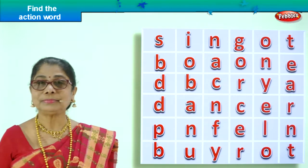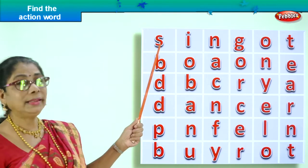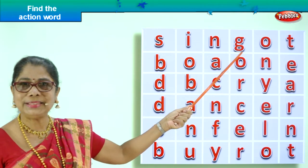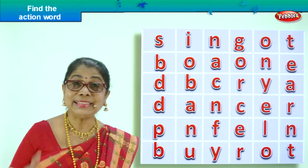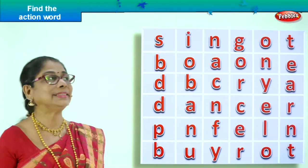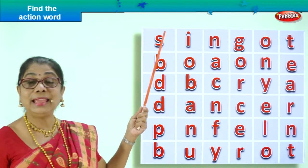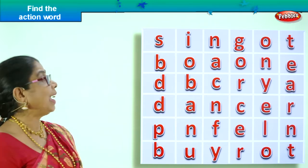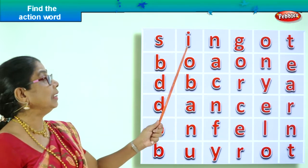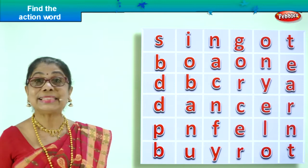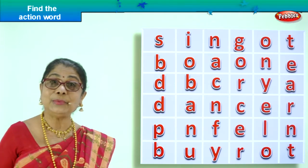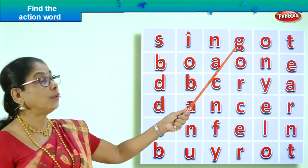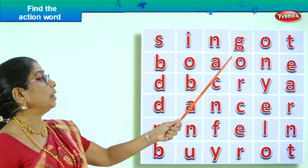Here we are. Look. S-I-N-G. What is S-I-N-G? Sing. Is sing an action word? Yes, let's circle it. S-I-N-G, sing. When do you sing? When you are happy. Anyone can sing. Sing is an action word. So we found the first action word.